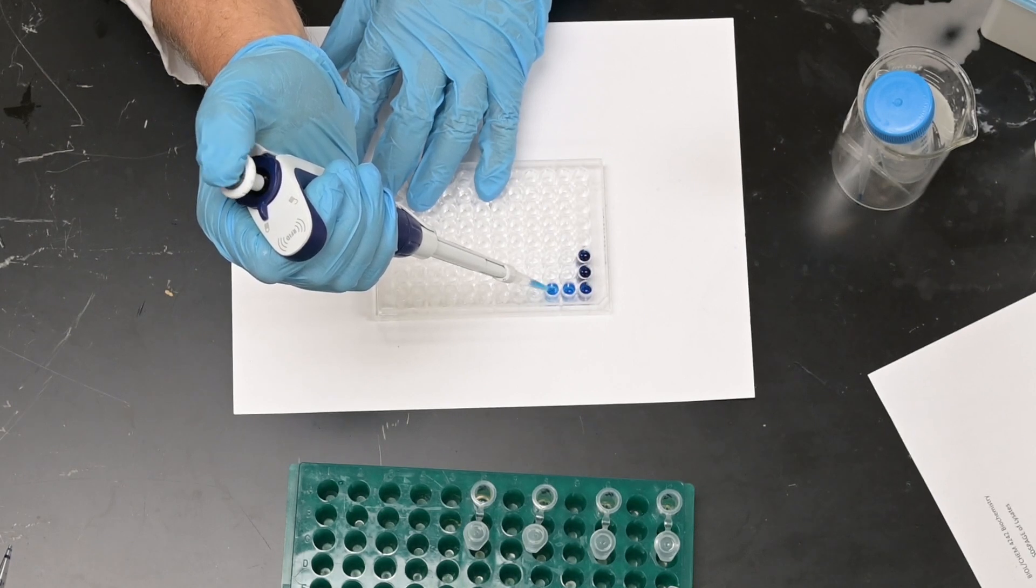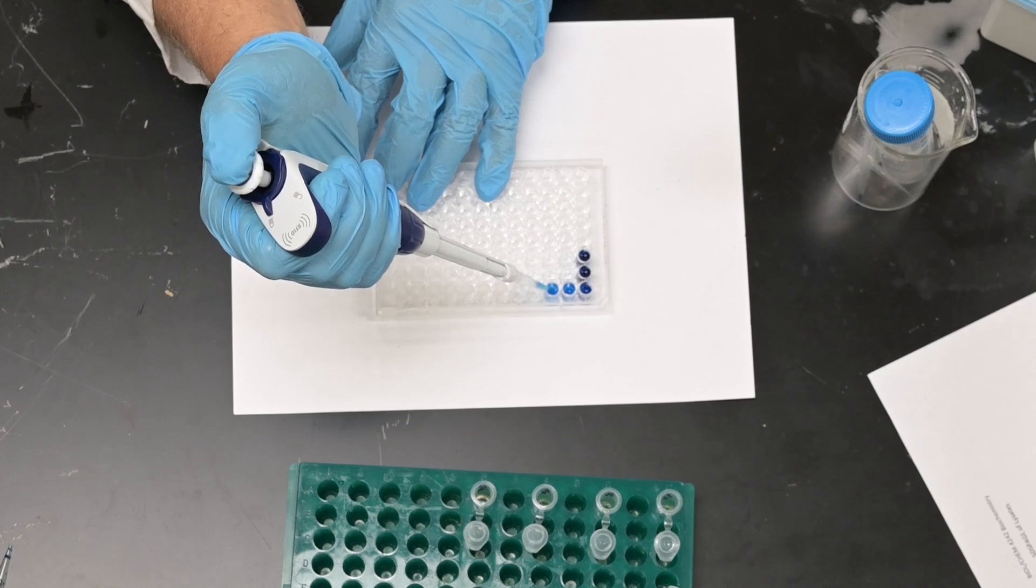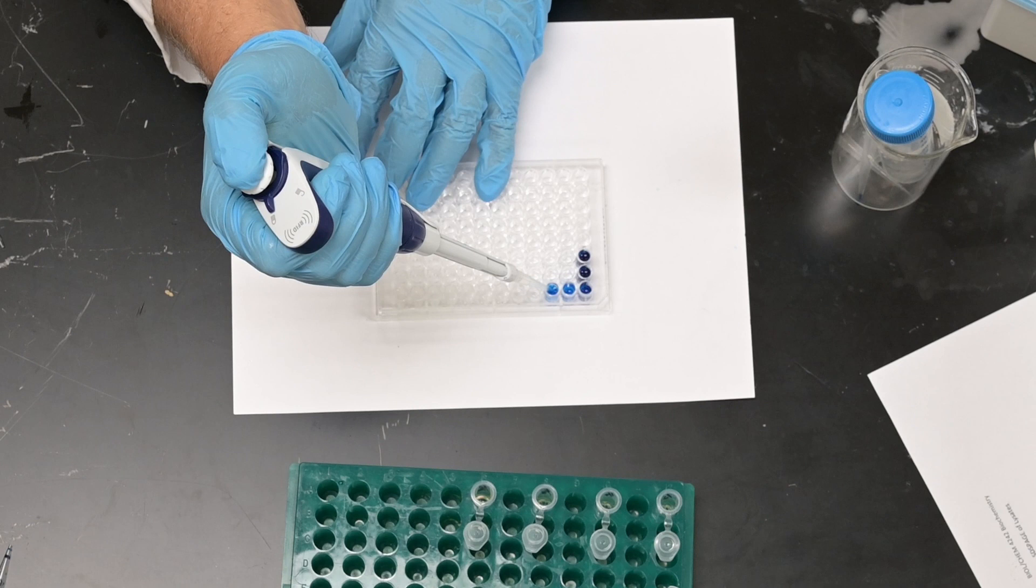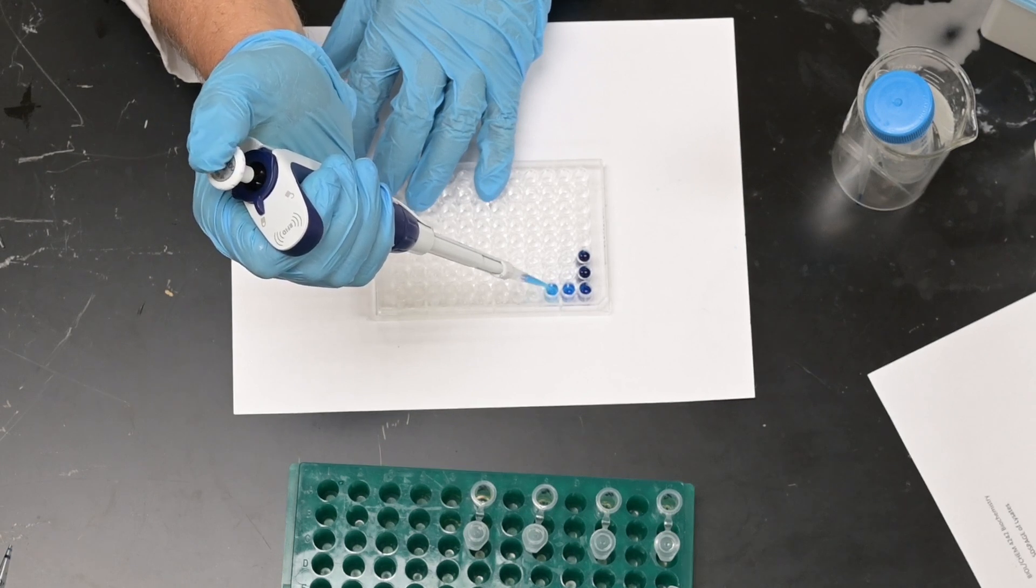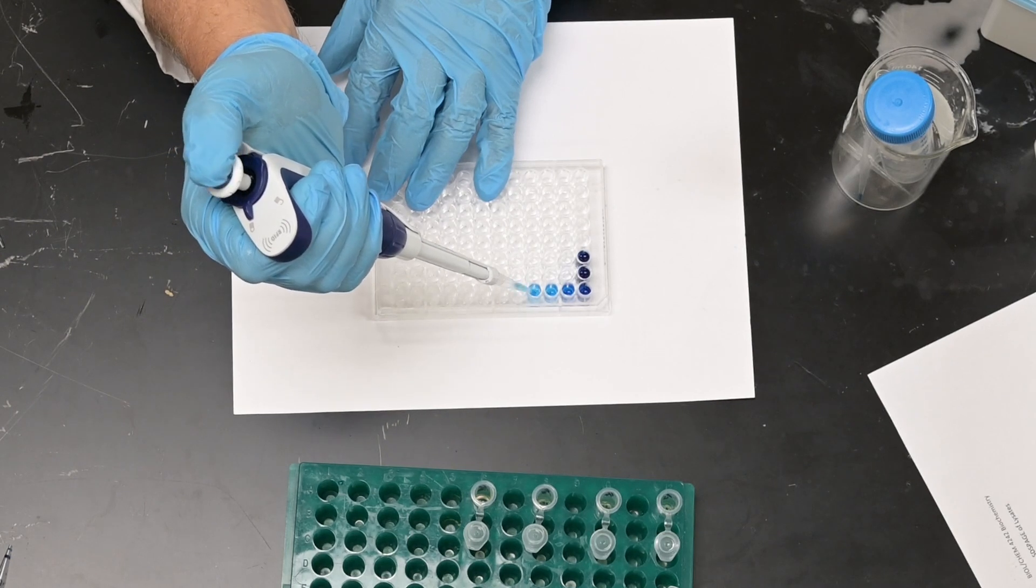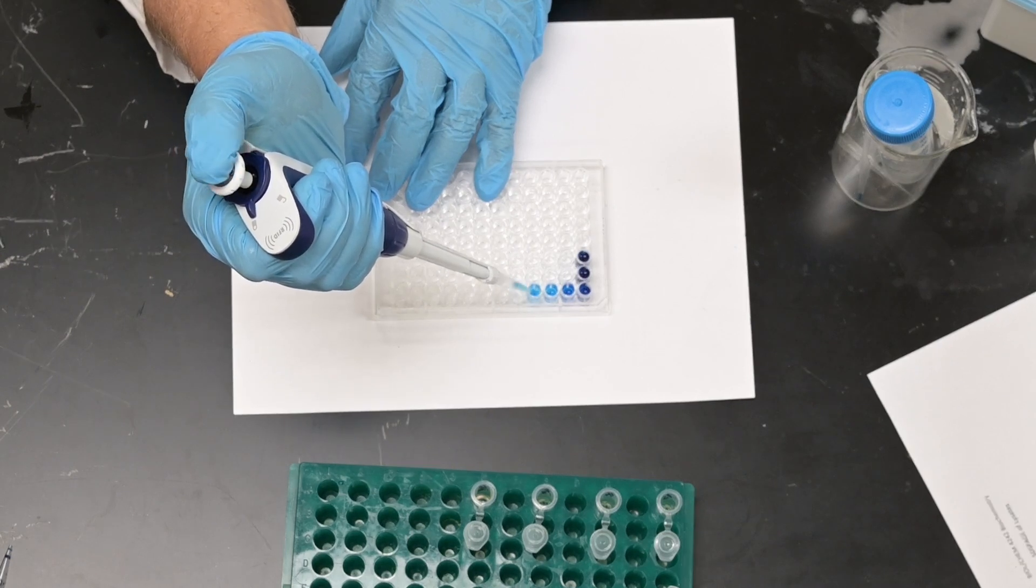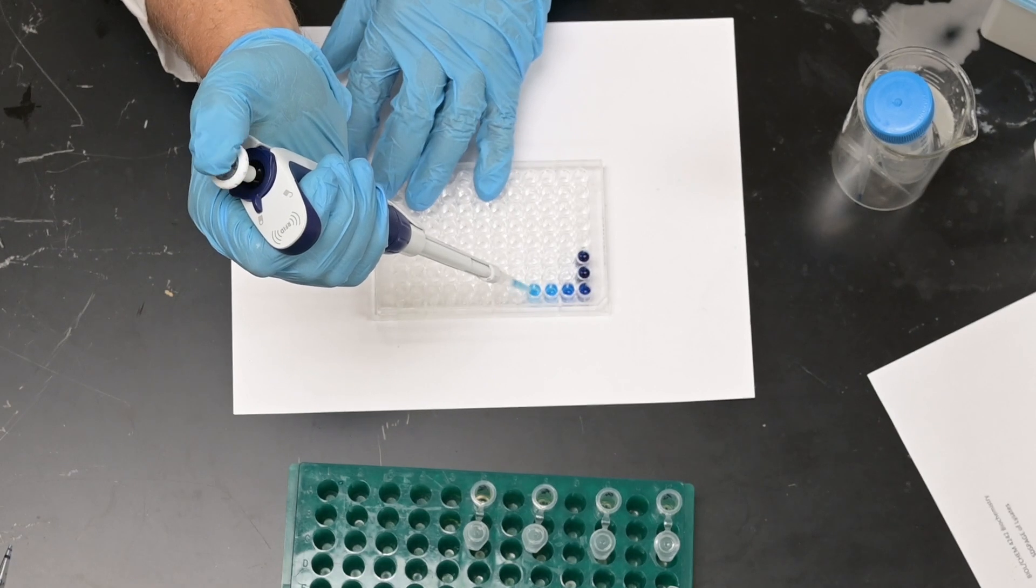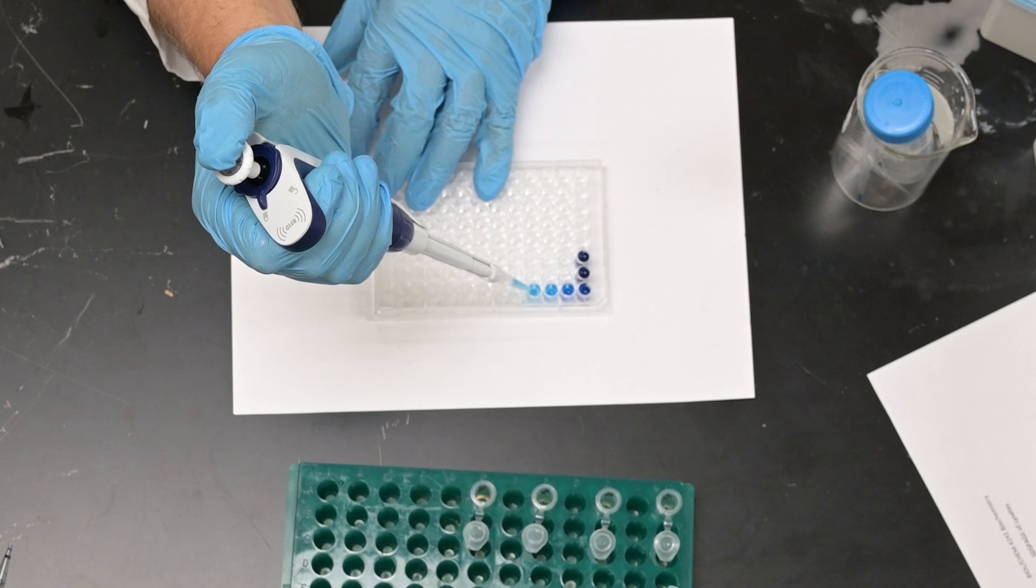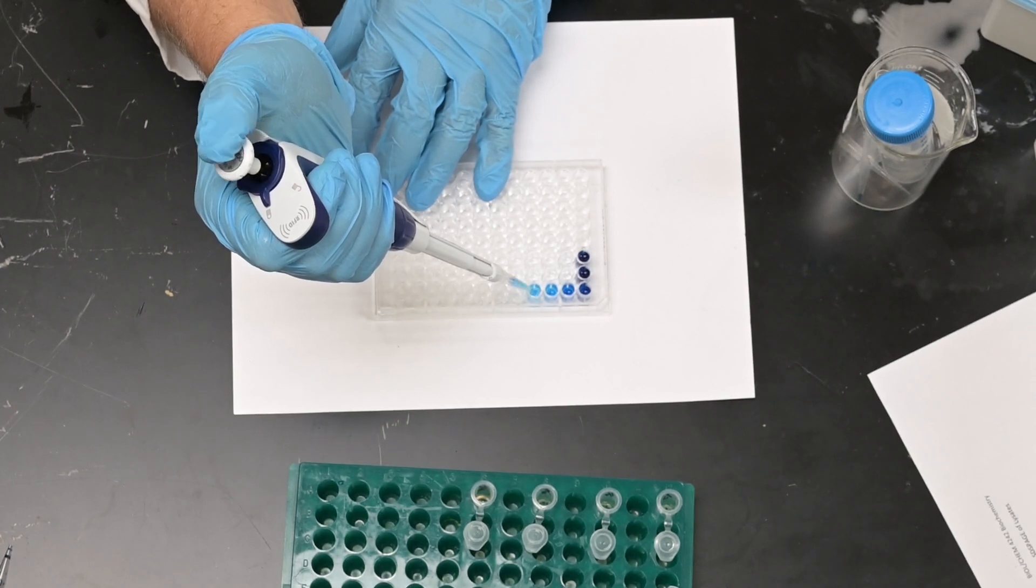If you push air into this you're going to create bubbles and that'll create problems for the plate reader. You'll get aberrant data. So now I've got that solution in A3 mixed up, now add it to A4, pipet up and down. I think you should do it at least three to four times. I do it between four to six times depending on how I feel and how much of a dilution we're making.